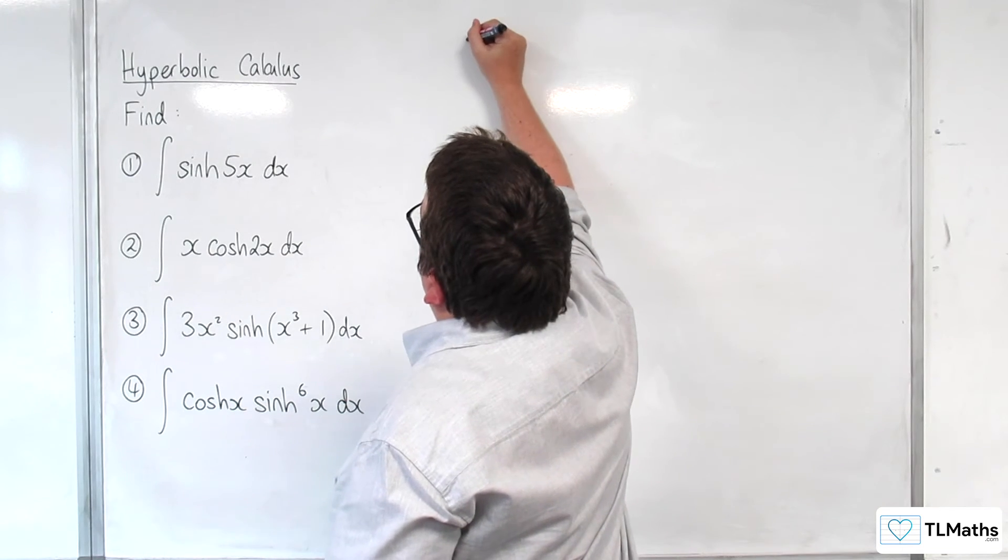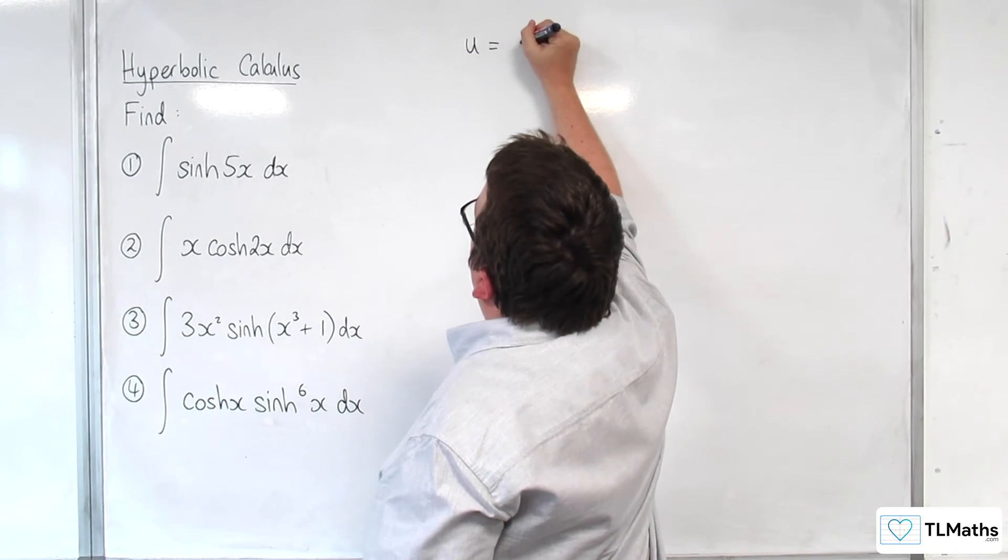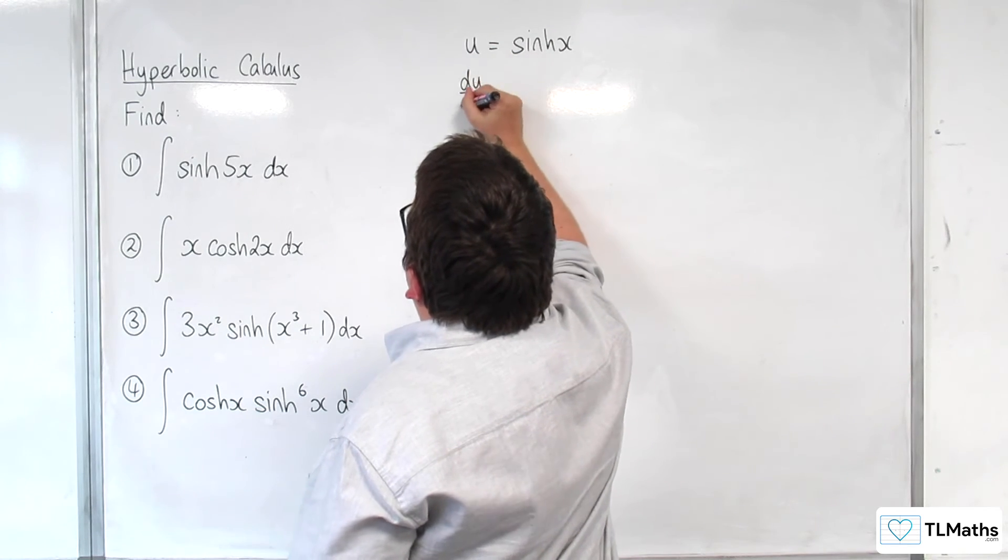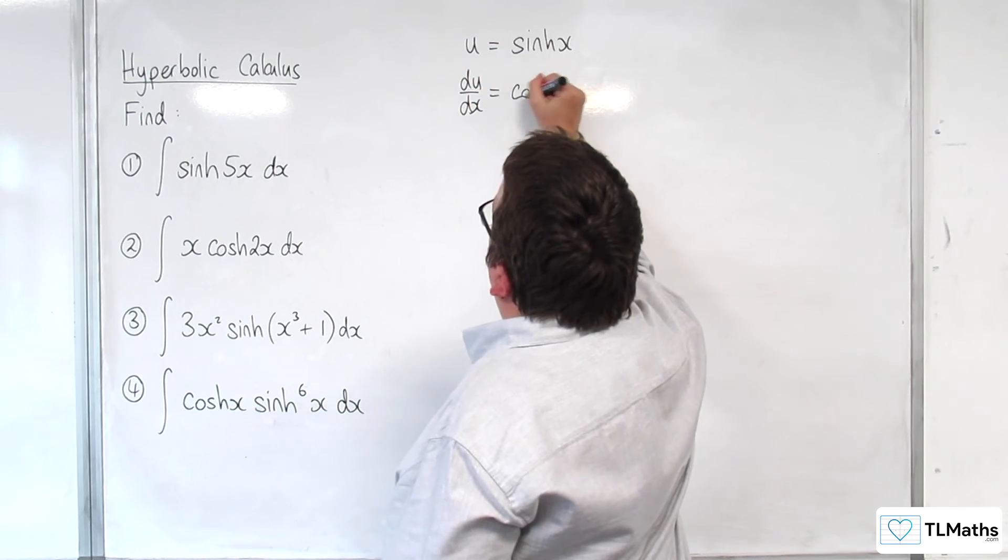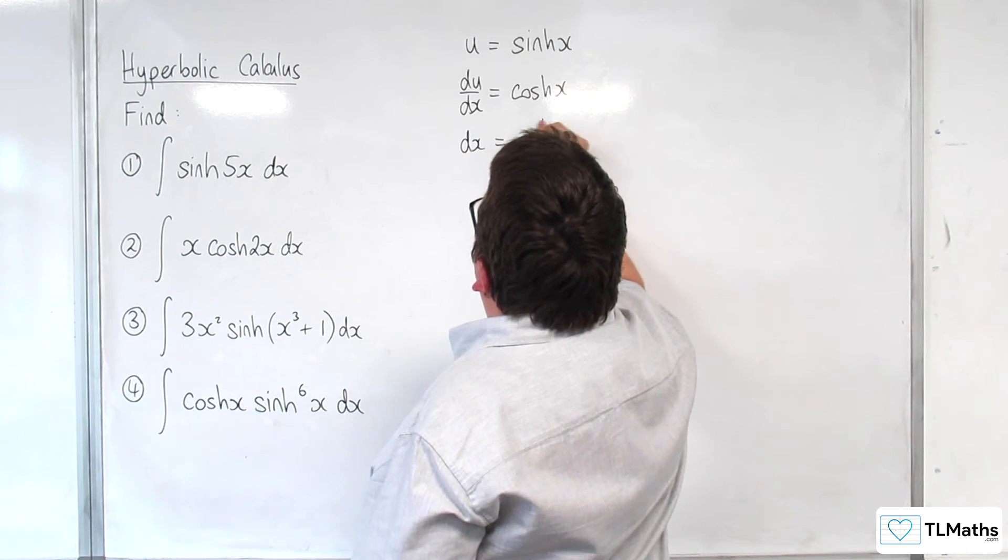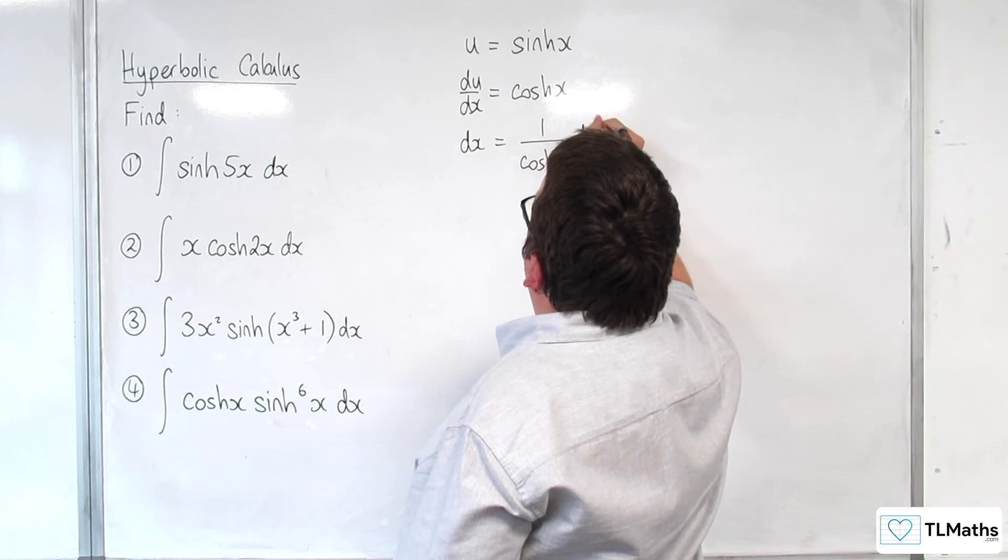So, if you want to use substitution, u is equal to sinh of x. So du/dx is cosh of x. So dx is equal to 1 over cosh x du.